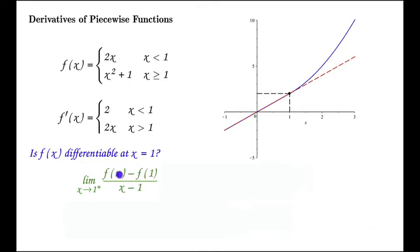Remember we used the difference quotient. So we have f of x minus f of 1 over x minus 1. And we want to consider the limit as x approaches 1 of f of x minus f of 1 over x minus 1.